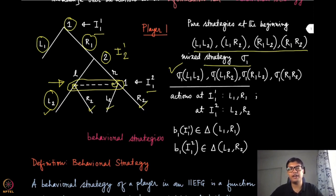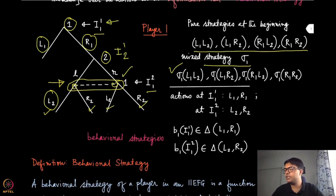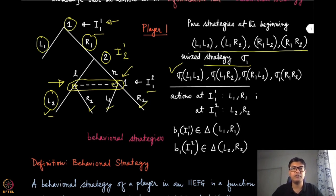Now you can think of another kind of randomization which does not list out all possible strategies at the very beginning. Player one can just toss a coin at this information set and decide whether to play L1 or R1. Similarly, when it reaches information set I1,2, it can toss another coin, which will give it a different probability distribution over the strategies L2 and R2. That looks more natural in this case, because there is independence in two different information sets.